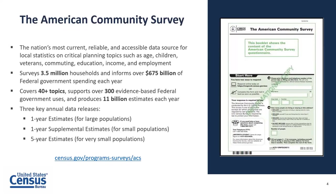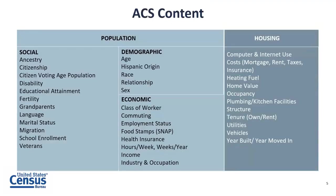ACS data is released every year through three key data releases: one-year estimates, one-year supplemental estimates, and five-year estimates — which is the data used in the COVID hub. The topics can be grouped into four main characteristics: social, demographic, economic, and housing. Social characteristics include disability status, education, and language spoken at home. Demographic characteristics consist of sex, age, race, and Hispanic origin. Economic characteristics include commuting to work, employment status, and income. Housing characteristics include computer and internet use, housing costs, and vehicles available.